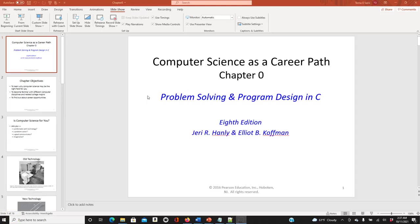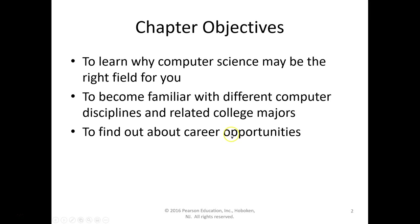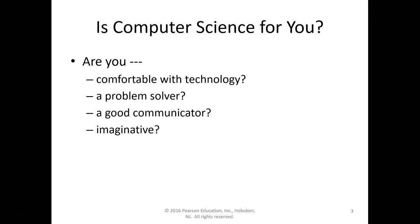Welcome to Computer Science 116, Introduction to C Programming. This is Chapter Zero, just an overview of what kind of career you can get with a programming background. The chapter objectives are to learn why computer science may be the right field for you, to become familiar with different computer disciplines and college majors, and to find out about career opportunities.